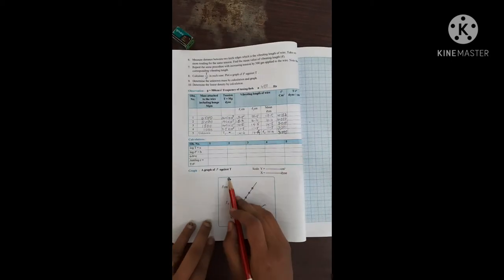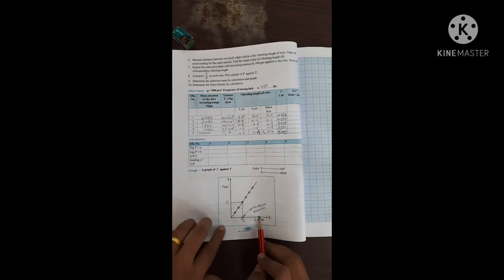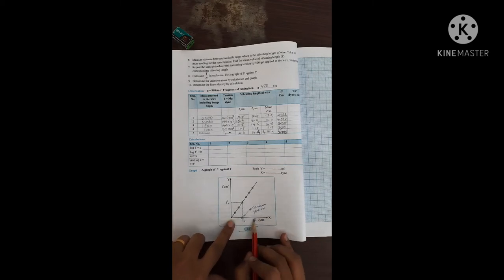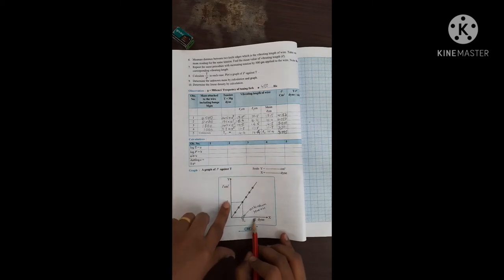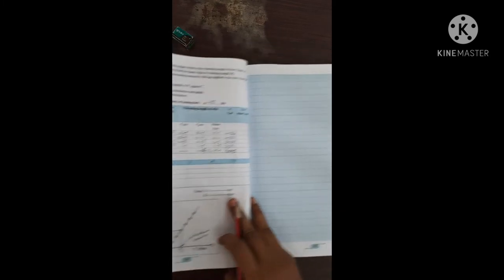Now what you have to do, you have to plot the graph. You have to take tension on x-axis, l square on y-axis. I'll just show you how it looks.